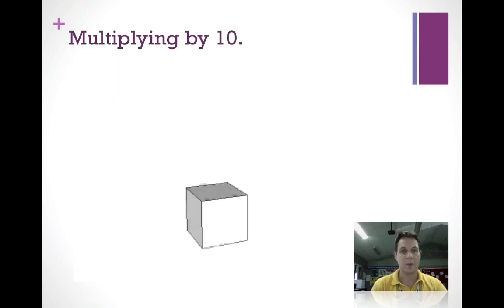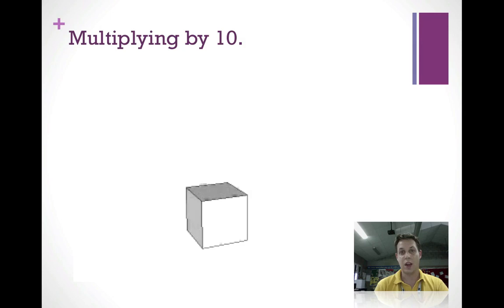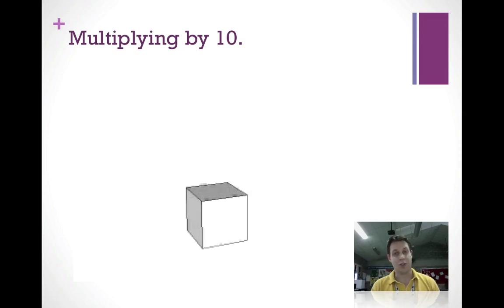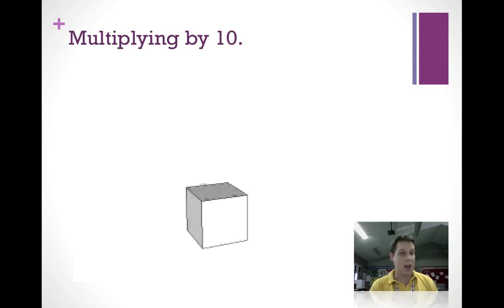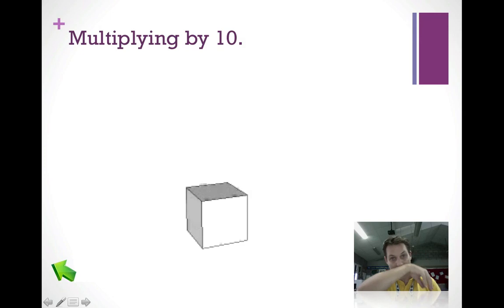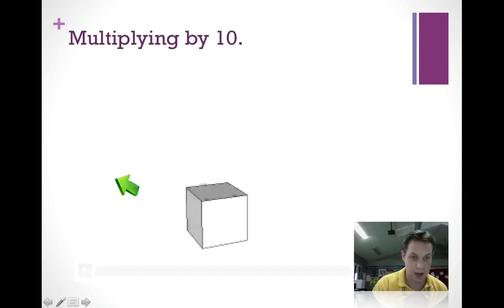So there are three easy steps: first, ignore the zeros; then multiply the two factors; then count the zeros in the two factors and put those on the end — and you have your answer. With a little bit of practice, you'll be able to do this in your head. I also found this little video to illustrate how multiplying by 10 can make things get very big very fast.